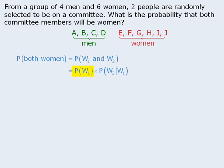The probability that the first person selected is a woman: there are ten people altogether and six are women, so this probability is six-tenths. For the second person selected to be a woman, given that the first person selected is a woman, there are nine people remaining and five of them are women. So that conditional probability is five-ninths. When we multiply the two fractions, we get one-third — the probability is still one-third that both selected people will be women.